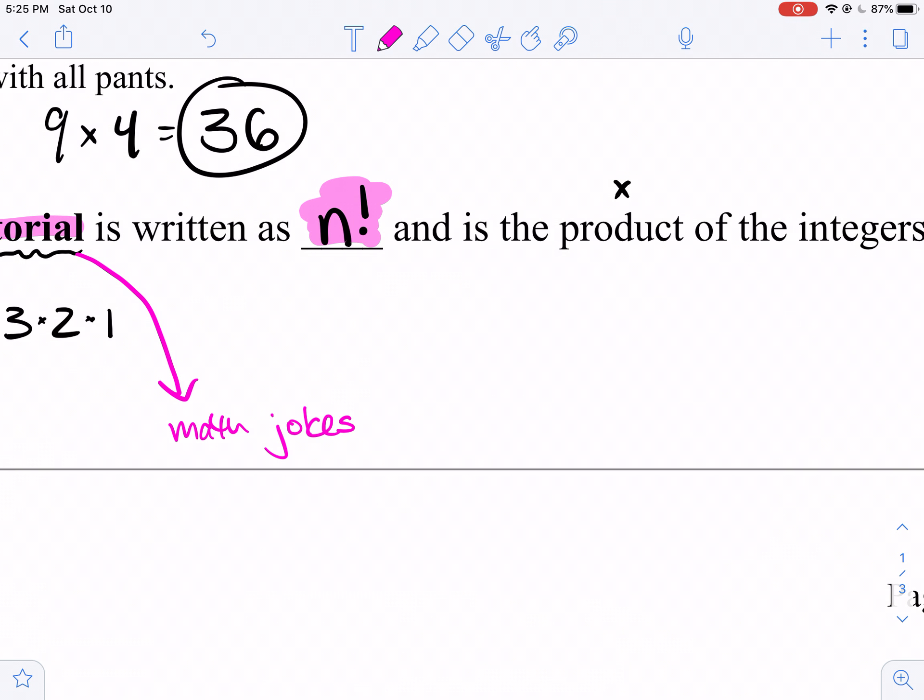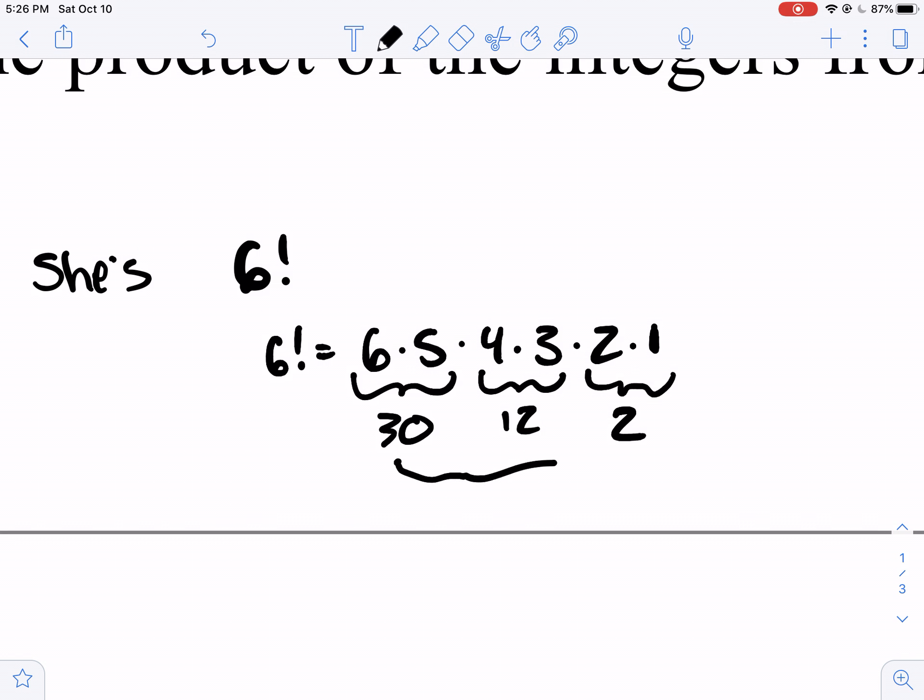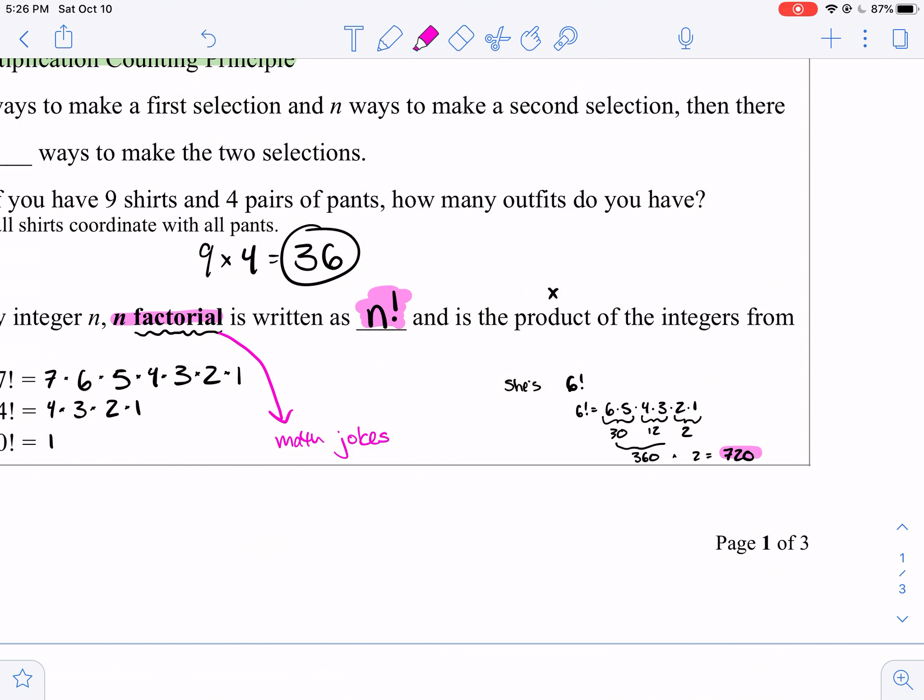Now, factorials are the subject of several math jokes. In fact, if you're a Redditor, there's an entire subreddit devoted to unexpected factorials. The jokes being that, you know, if someone says, oh yeah, my daughter is turning 6, she's 6 factorial? Because 6 factorial is 6 times 5 times 4 times 3 times 2 times 1, so she's 720 years old. Wow, she's like super old. So, there you go. That's a joke.